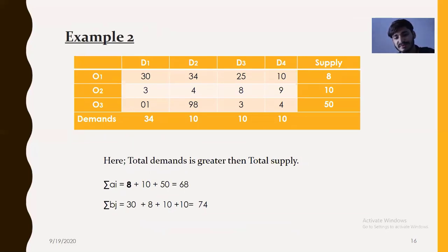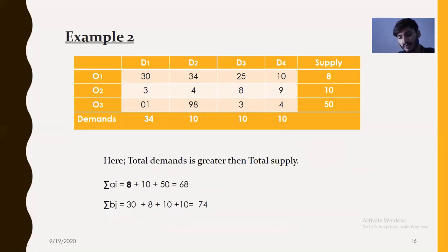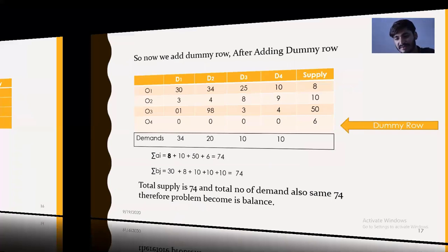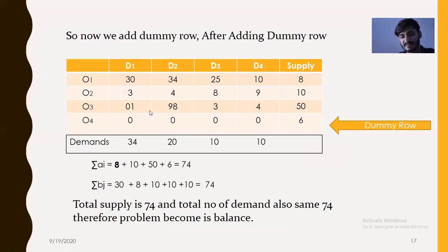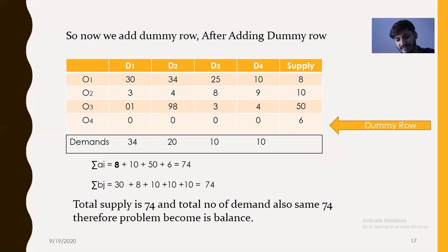In Example 2, the total demand is greater than total supply. The demand is 64 and the supply is 68 — wait, the demand is greater than supply. We add a dummy row to make them equal. Now you can see the demand and supply are equal: total supply is 74 and total demand is also 74, so the problem becomes balanced.